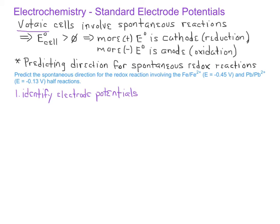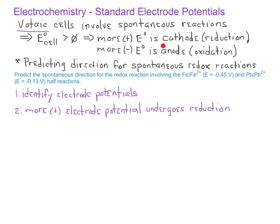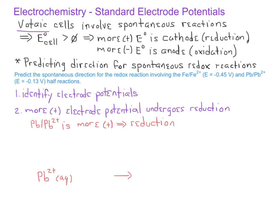Now that we know the electrode potentials for the two half-reactions, we go back to what we know about spontaneous reactions. The more positive electrode potential undergoes reduction, and the more negative electrode potential undergoes oxidation. Since the lead/lead 2+ half-reaction has the more positive electrode potential at negative 0.13 volts, it will be in reduction form — meaning lead 2+ is on the reactant side and lead metal is on the product side.